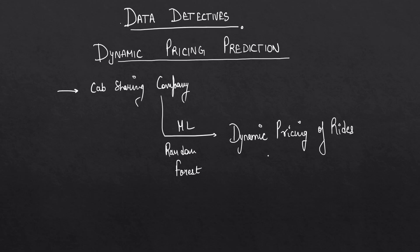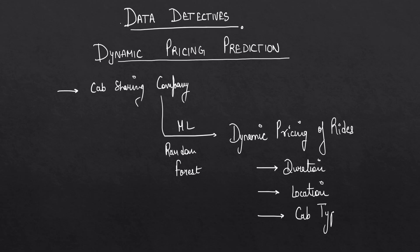It is possible that there can be multiple features influencing the pricing of the rides — it can be the duration, it can be the location, it can be cab type, and so on. We will be using multiple features that are available and using those we will be predicting the pricing for our cabs using the machine learning algorithm. So let's go to Jupyter Notebook.